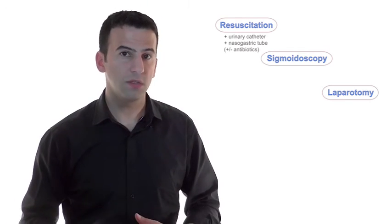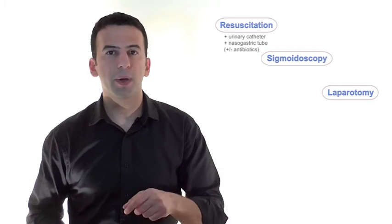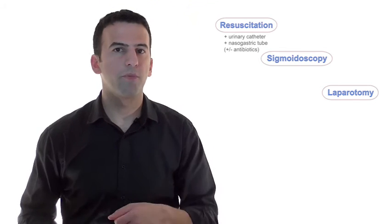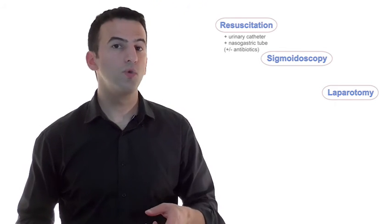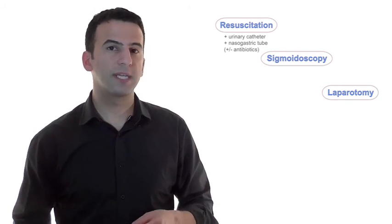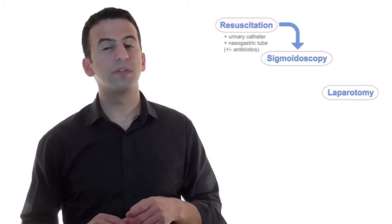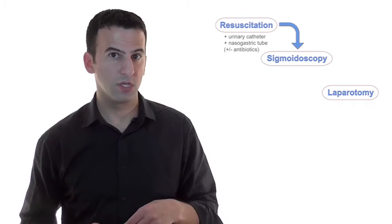Now, after you have resuscitated your patient, let's pretend that he or she has no pain or tenderness, is afebrile, and the inflammatory markers are normal. Here it sounds reasonable to attempt to decompress and reduce the volvulus sigmoidoscopically, which is phase two. And this should be done as quickly as possible.